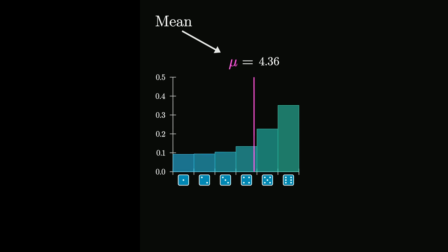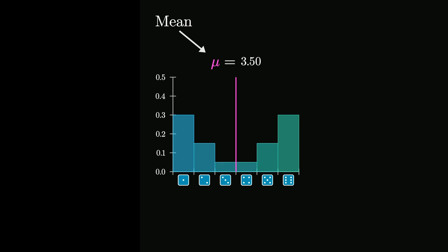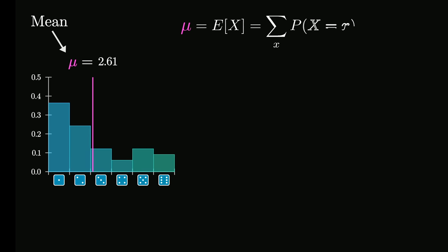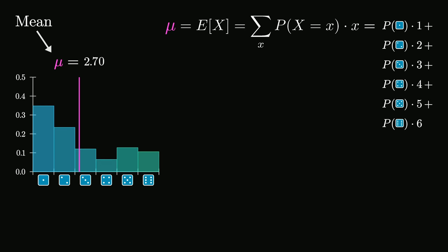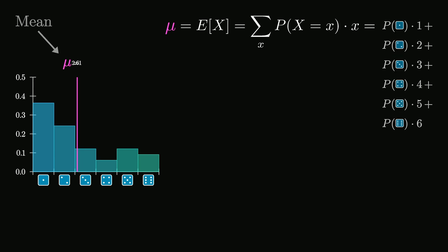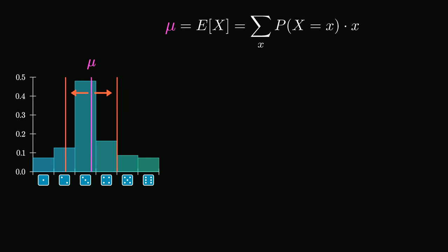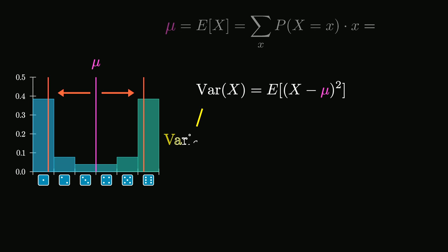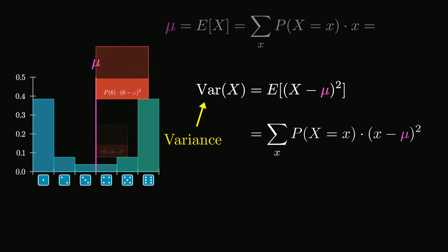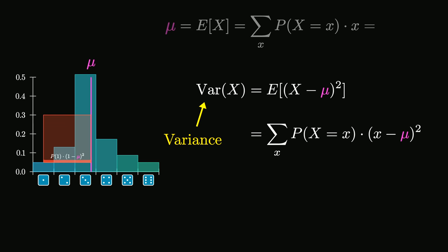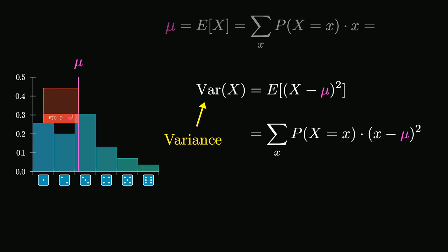The mean of a distribution, often denoted with the Greek letter mu, is a way of capturing the center of mass for that distribution. It's calculated as the expected value of our random variable — you go through all of the different possible outcomes and multiply the probability of that outcome times the value of the variable. If higher values are more probable, that weighted sum is going to be bigger; if lower values are more probable, it's going to be smaller. A little more interesting is measuring how spread out the distribution is. One measure is called the variance: you look at the difference between each possible value and the mean, square that difference, and ask for its expected value. Squaring turns out to make the math much nicer than if we used an absolute value.